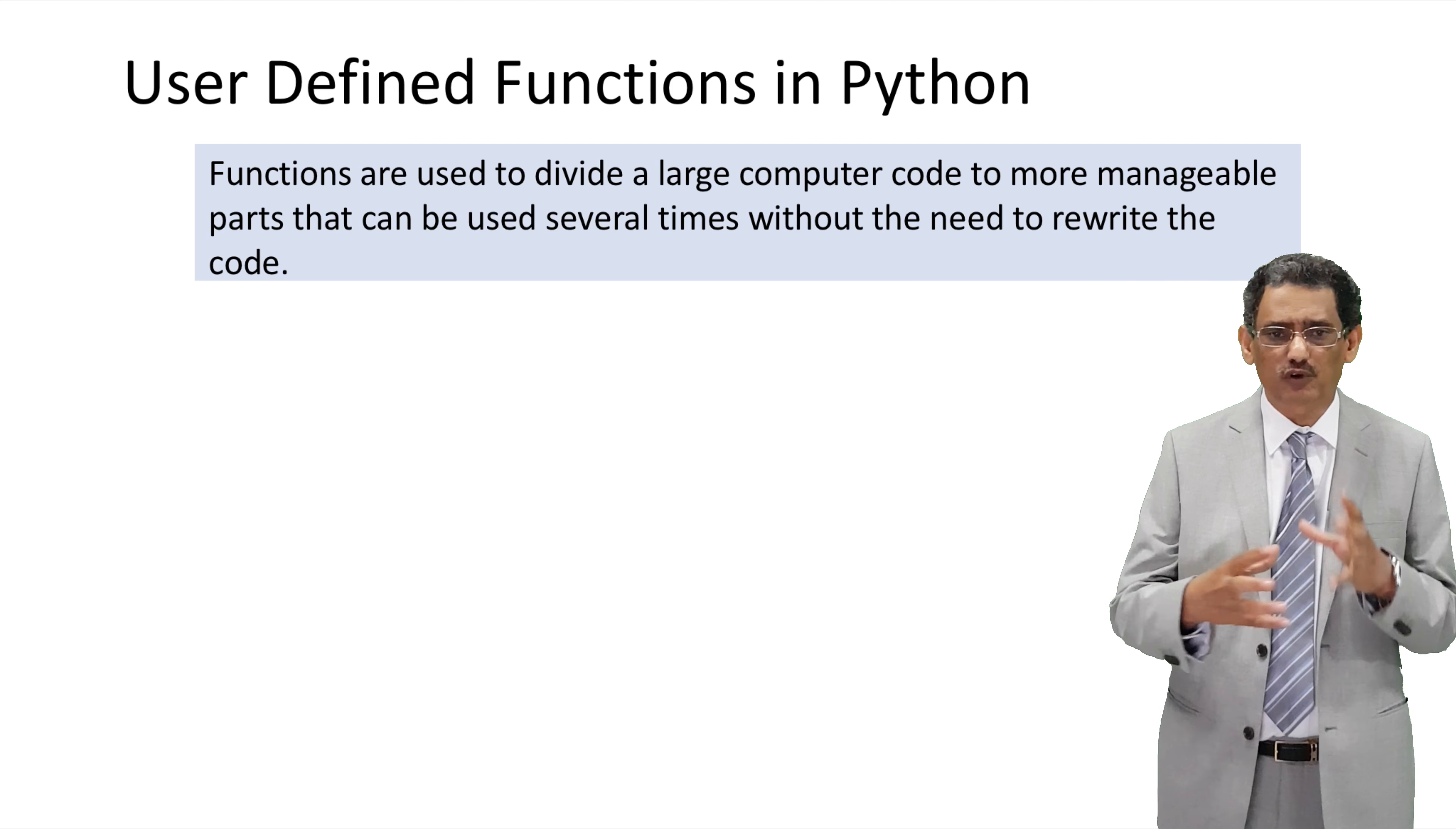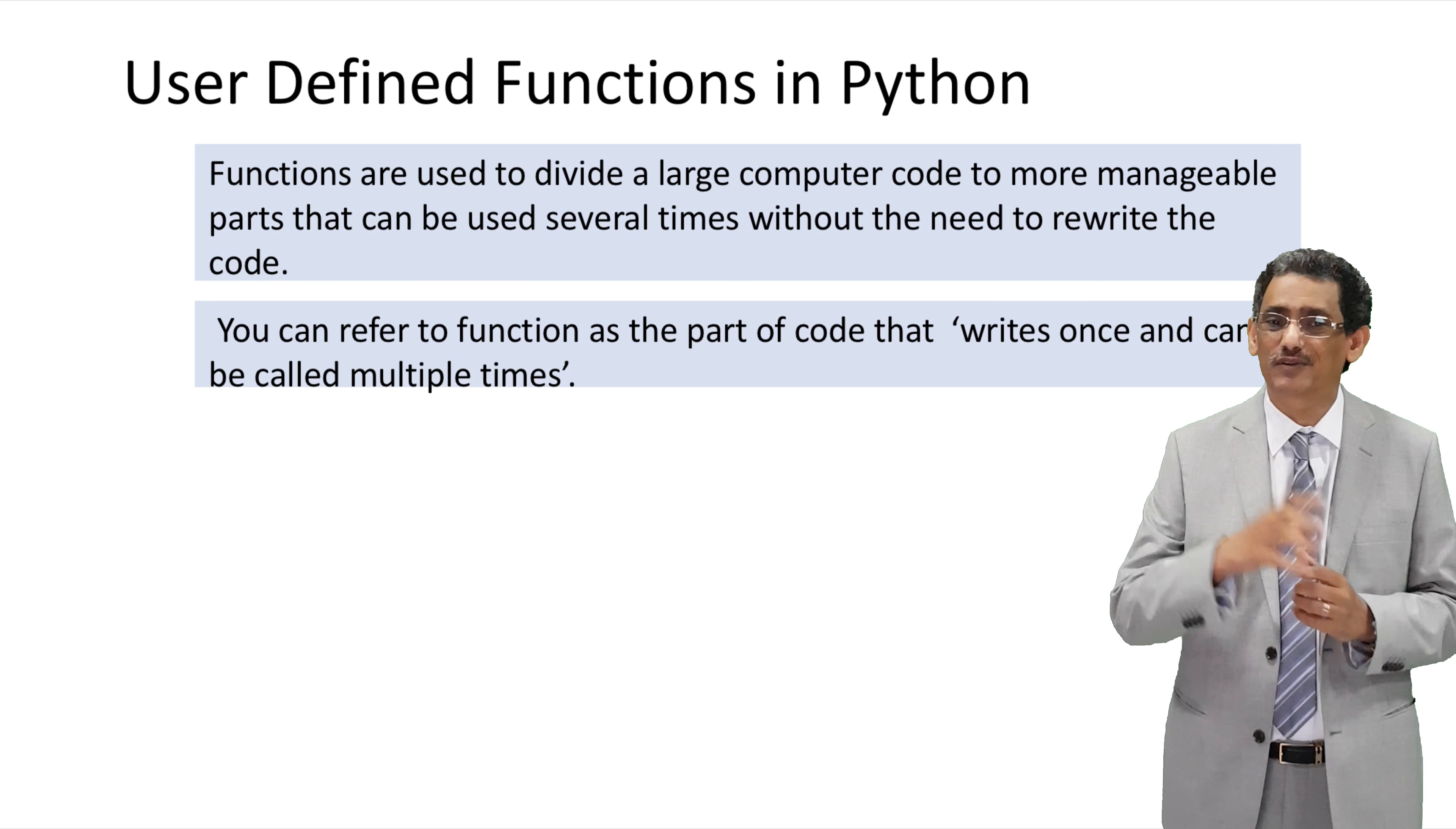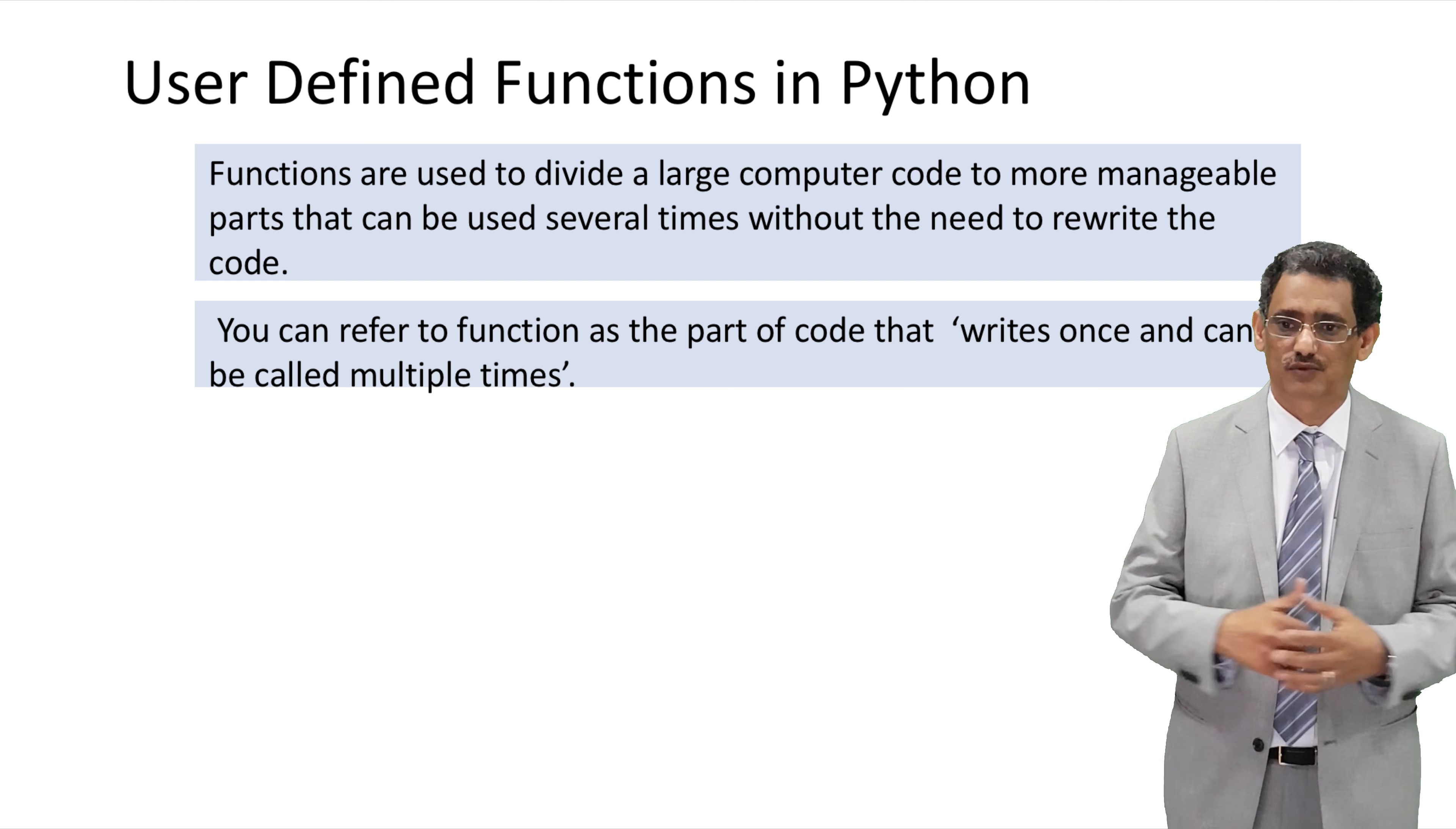So it's a part of your code. Instead of having your code all written in one block, you start dividing it into smaller components. Why you need to do that? I said you need to manage this large code. But the other important component is the reusability of your code. So if you want to use a code multiple times, you don't need to write it again and again. You just write it once and use it as much as you would like.